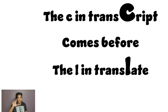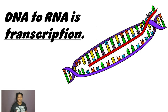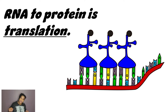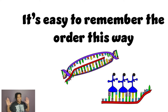DNA to RNA is transcription. RNA to protein is translation. See a trust field comes in for the L to translate — it says it'll remember the order this way.